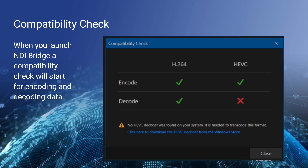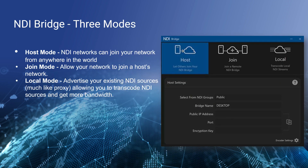We have not installed the High Efficiency Video Codec decoder from the Windows Store, so the compatibility check flags that. Encoding is taking the video signal, compressing it, and getting it ready to send; decoding is receiving and decompressing it. The three modes are host mode, join mode, and local mode — because there is a need in many networks to have a bridge that's local to your LAN and can transcode video.